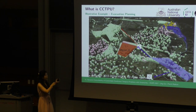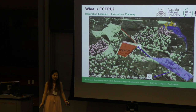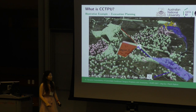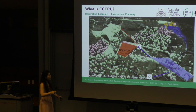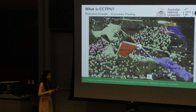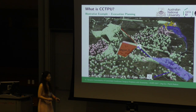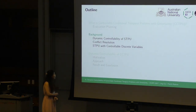However, in evacuation planning there are many uncertain factors — such as we cannot control how long it takes for the flood to obstruct G — but we need to evacuate them before it blocks the road. That is CCTPU: Controllable Conditional Temporal Problems with Uncertainty.